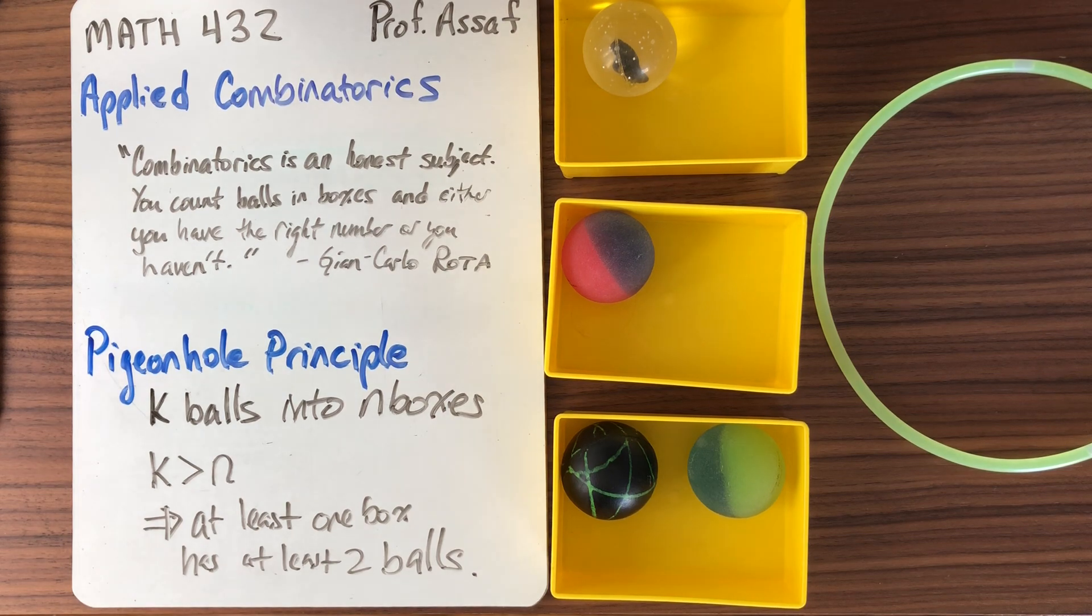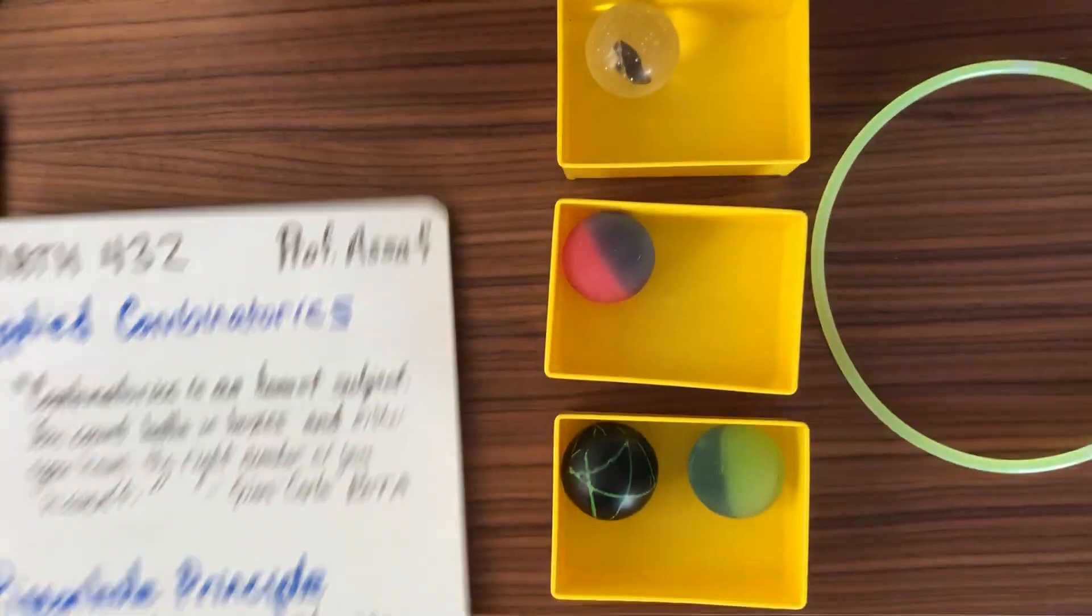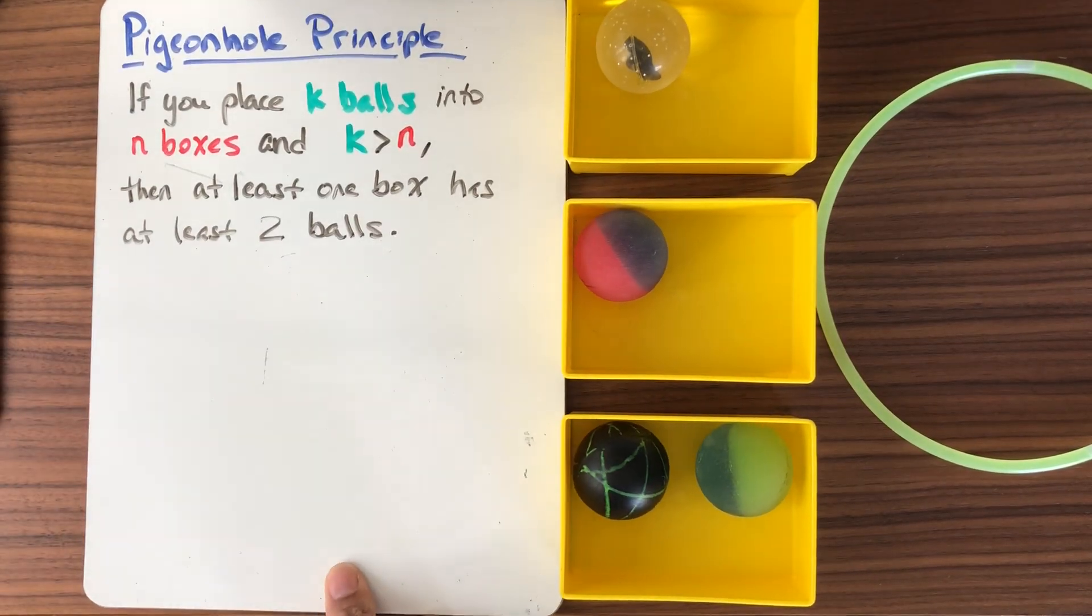The strategy that we're going to use to prove it is going to be contradiction. So our first lesson, I guess, is combinatorics is concrete. Let's do some examples. When we have an obvious statement like the Pigeonhole Principle, we're going to prove it by contradiction.